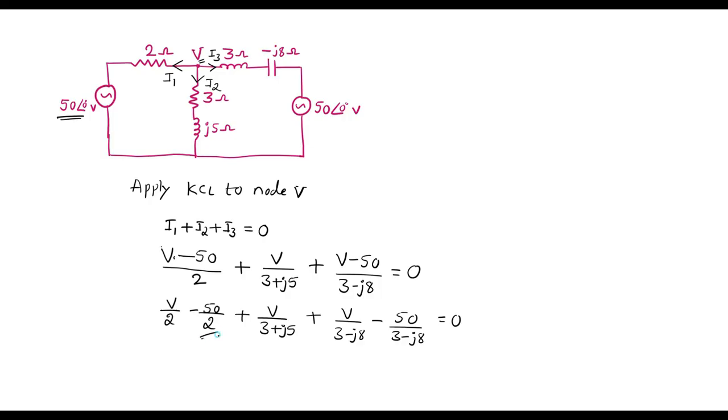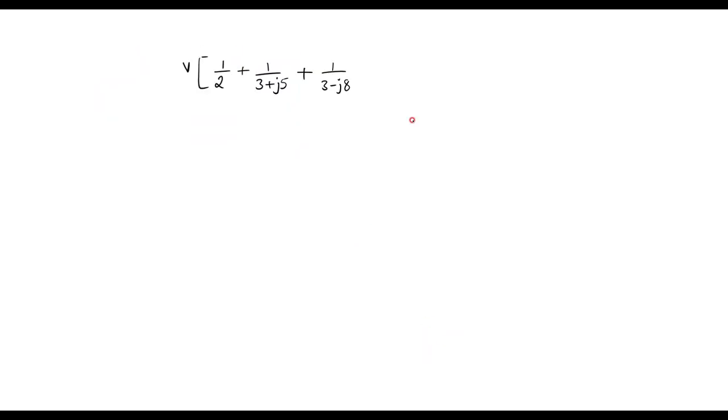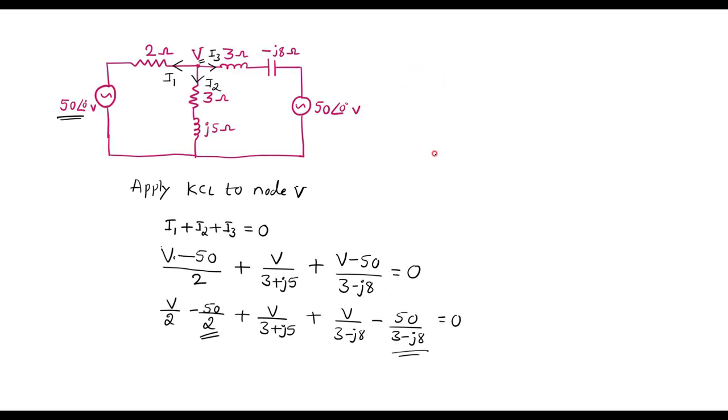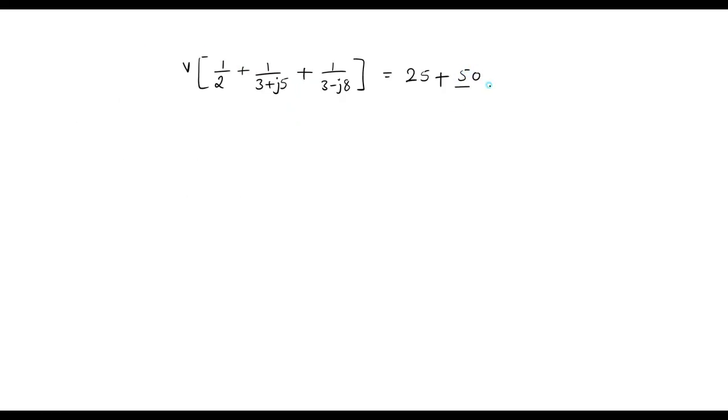So here we have minus 50 by 2. I will take this on right hand side and this term on right hand side. 50 by 2 is 25, so this will be equal to 25 plus 50 divided by 3 minus J8.